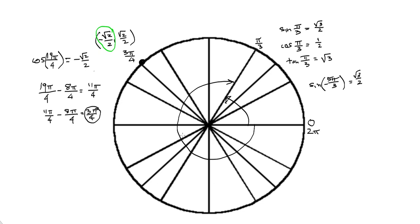So that's sine, cosine, and tangent. That was a lot of information for one video — you'll have to digest that a little bit. Certainly make a copy of the unit circle for yourself with all of the angles and all of the coordinates. It sometimes helps to make a table showing all of the angles, coordinates, and the sine, cosine, tangent, cotangent, secant, and cosecant — which we're going to do on the next video — just so you have them all handy. Thanks a lot!